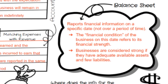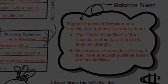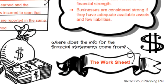The balance sheet reports financial information on a specific date — not over a period of time, but just like a snapshot. The financial condition of the business on that date refers to its financial strength, and businesses are considered strong if they have adequate available assets and few liabilities. The balance sheet uses the accounting equation: assets equal liabilities plus owner's equity. The source of all this financial statement information is the worksheet, which accountants use to organize data so owners, managers, and investors can make educated decisions.